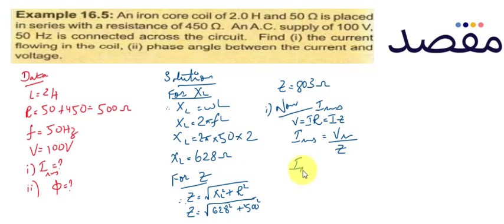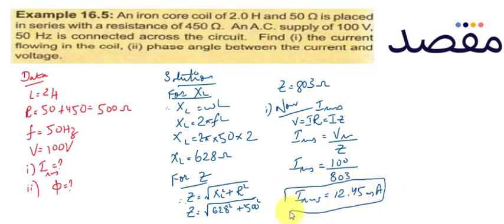I RMS equals V value given as 100 divided by Z which is 803. So our current RMS value is 0.1245 amperes, which is 124.5 milliamperes.